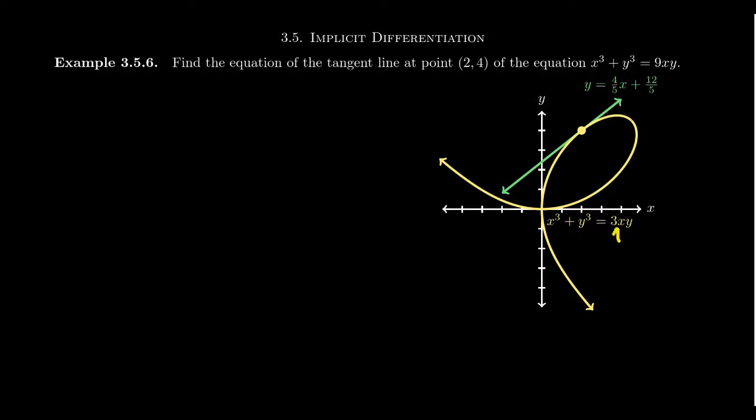You can throw in an extra parameter a and get these little loop-de-loops — it's like a function for a roller coaster. But we want to find the equation of a tangent line for this folium that we see on the screen. In particular, we want to find the tangent line at the point (2, 4), for which you can see this is a legitimate point on the graph.